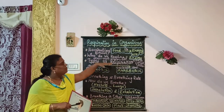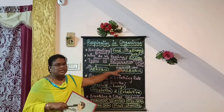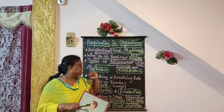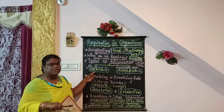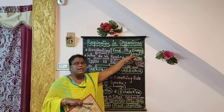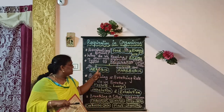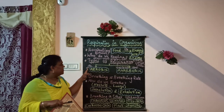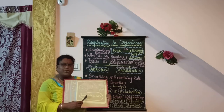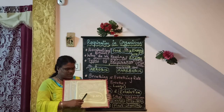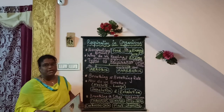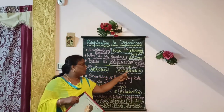Next topic is types of respiration. There are two types: aerobic respiration and anaerobic respiration. Aerobic respiration is the breakdown of food materials into energy in the presence of oxygen. This takes place in the mitochondria, in the presence of oxygen, and so it is called aerobic respiration.